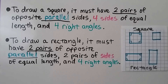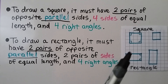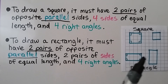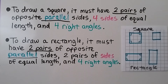To draw a rectangle, it must have two pairs of opposite parallel sides, just like the square, two pairs of sides of equal length — here's one pair of equal length, and that's two pairs — and it has four right angles.